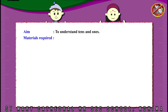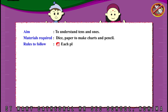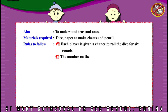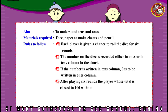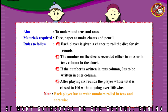Materials required: dice, paper to make charts, and pencil. Rules to follow: each player is given a chance to roll the dice for six rounds. The number on the dice is recorded either in the ones or tens column in the chart. If the number is written in the tens column, zero is to be written in the ones column. After playing six rounds, the player whose total is closest to one hundred without going over one hundred wins. Each player has to write numbers rolled in tens and ones wisely to win.